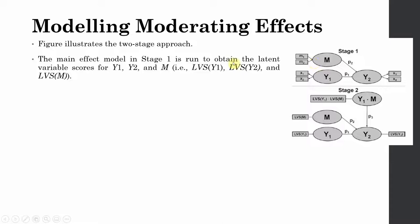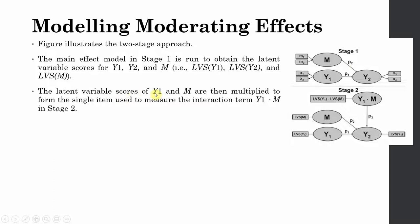In stage 1, the main effect model has the IV exogenous variable and the moderating variable both impacting Y2 as exogenous variables. We run this model to obtain latent variable scores for Y1, Y2, and M. The latent variable scores of Y1 and M are then multiplied together to get a single item used to measure the moderating interaction effect.